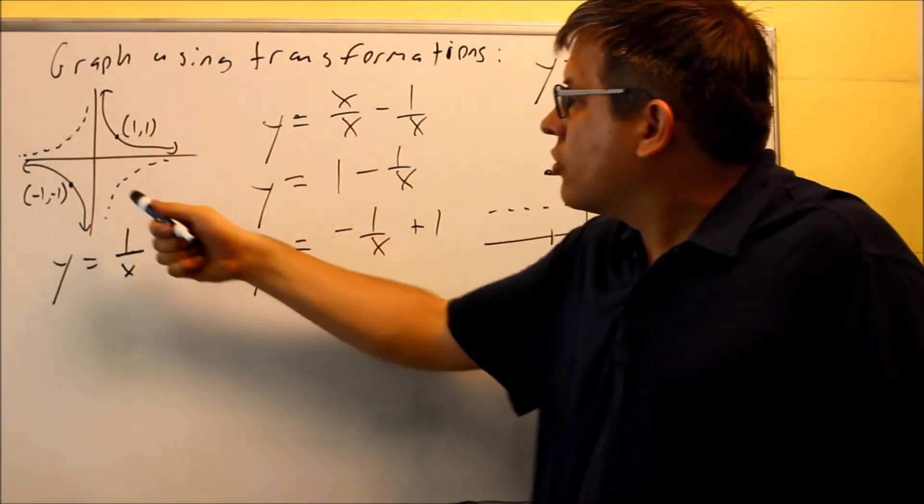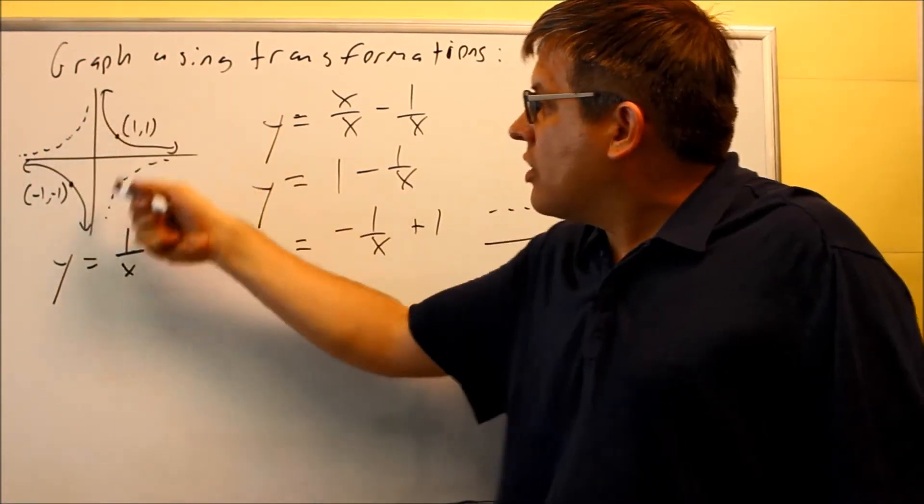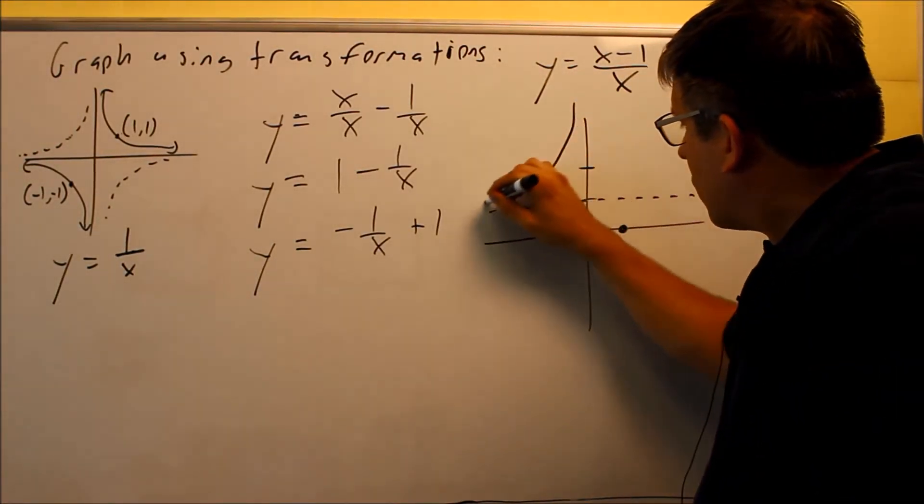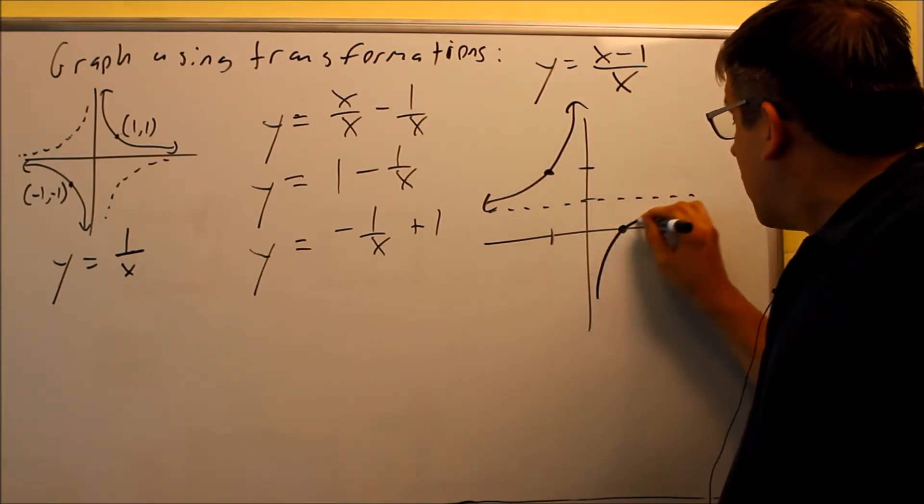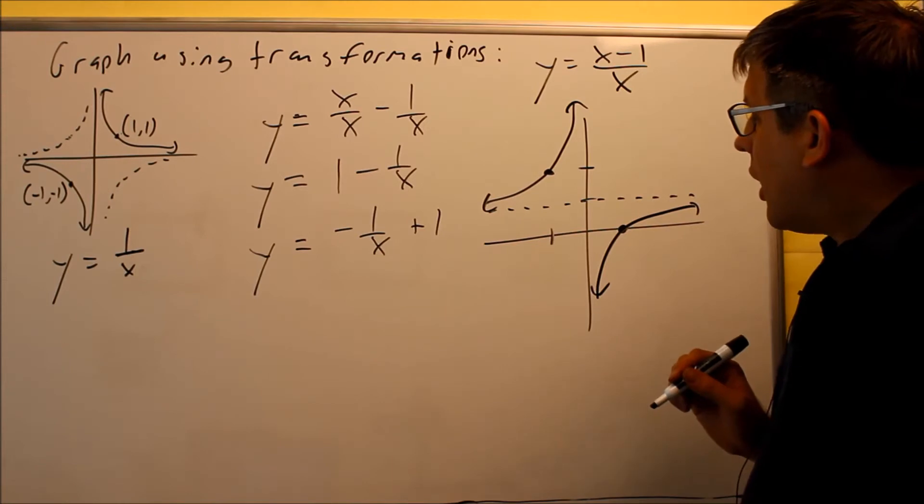All I'm doing is taking my original points and basically reflecting them over the line because they've got to look like these dotted lines here. The graph is going to come down and look like this, then the other one is going to look like that one. So this right here would be your completed graph.